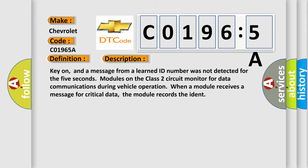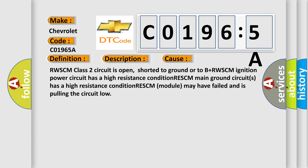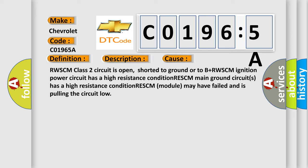This diagnostic error occurs most often in these cases: RWSCM class 2 circuit is open, shorted to ground or to B plus. RWSCM ignition power circuit has a high resistance condition. RWSCM module may have failed and is pulling the circuit low.